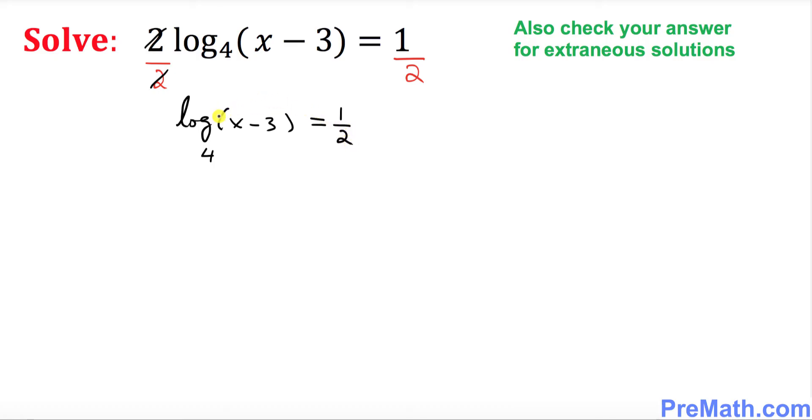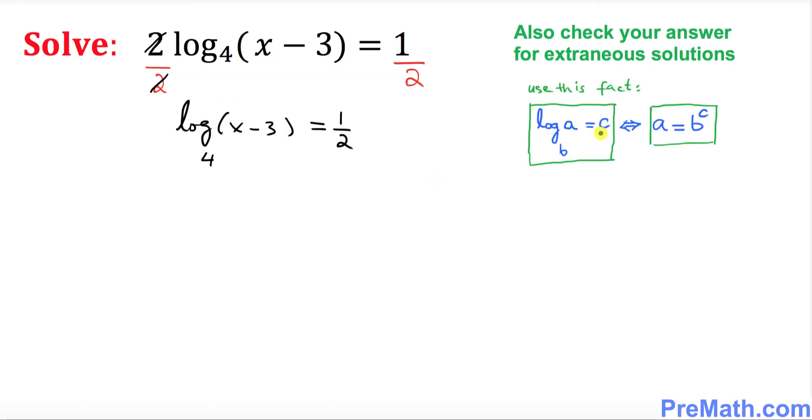Now we want to make things a little bit simpler by converting this logarithmic equation into an exponential one. So we will be using this fact on the right hand side when we convert from the logarithmic notation to an exponential one. So in this case this 4 is our base b, this part is an a, and the right hand part is c. So let's go ahead and put it in an exponential form.